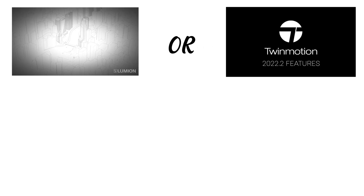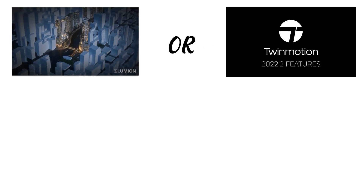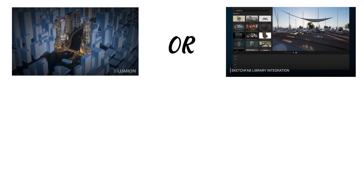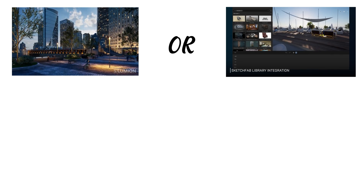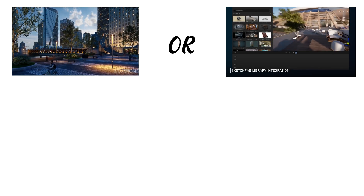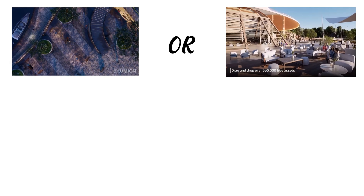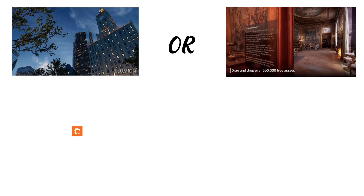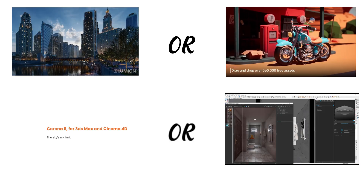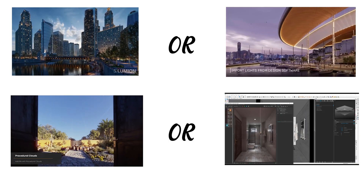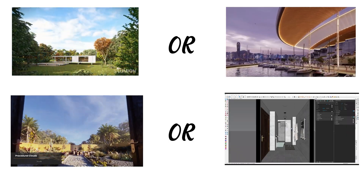For example, when you are using Lumion, or Twinmotion, or some other real-time rendering engine, you will only need a few touches of Photoshop to finalize your image. Unlike when you use Corona Render or V-Ray, where you will need more intense Photoshop work for post-production rendering.